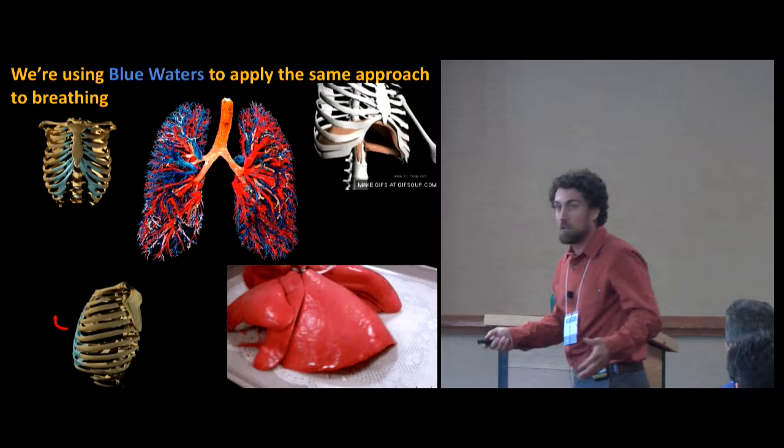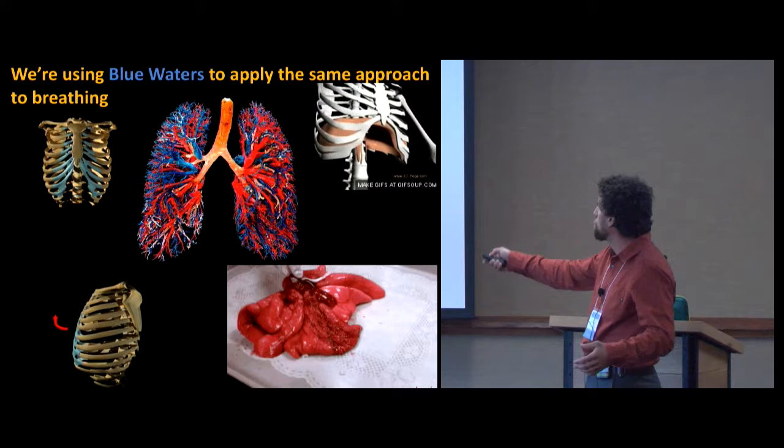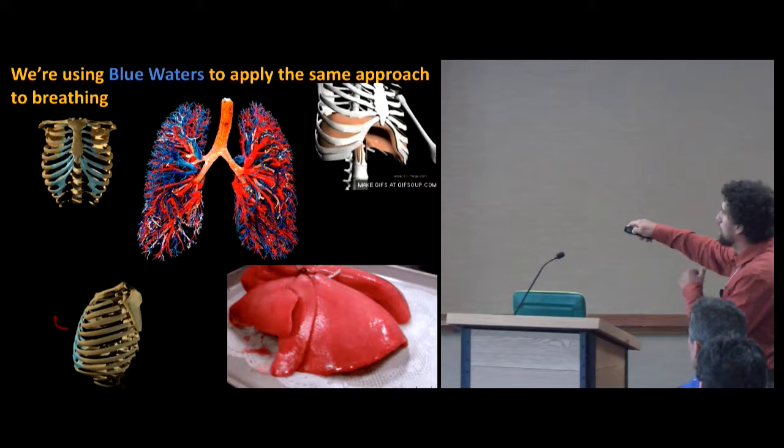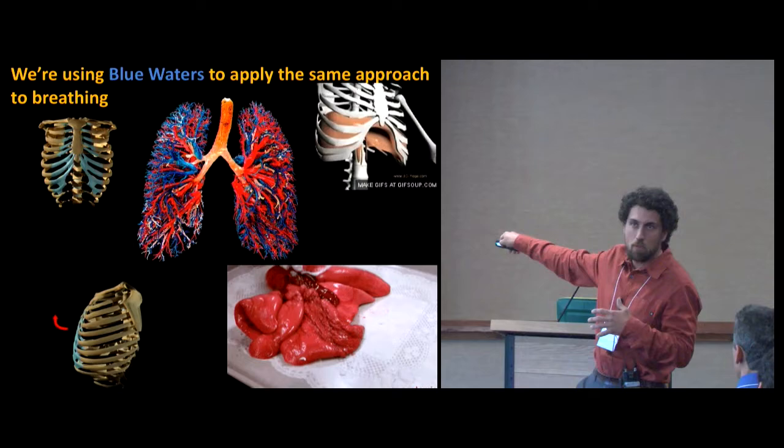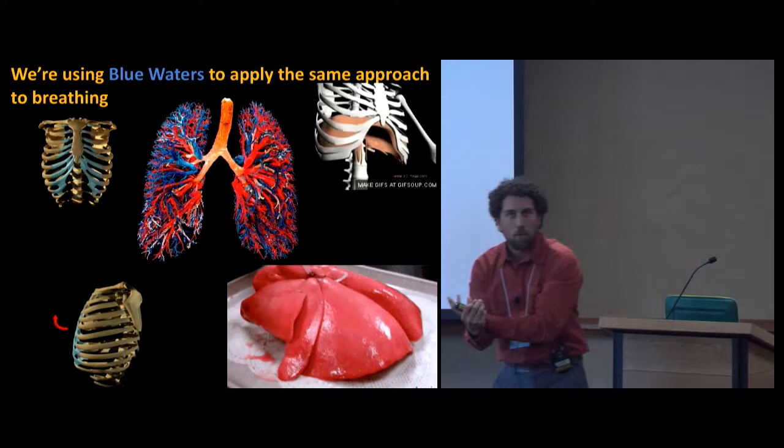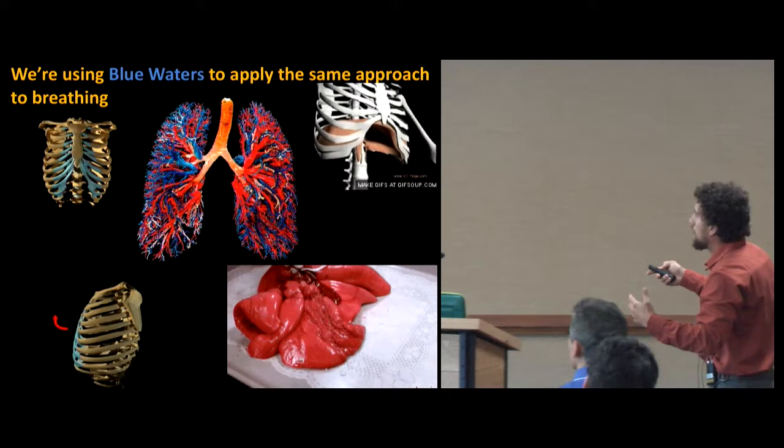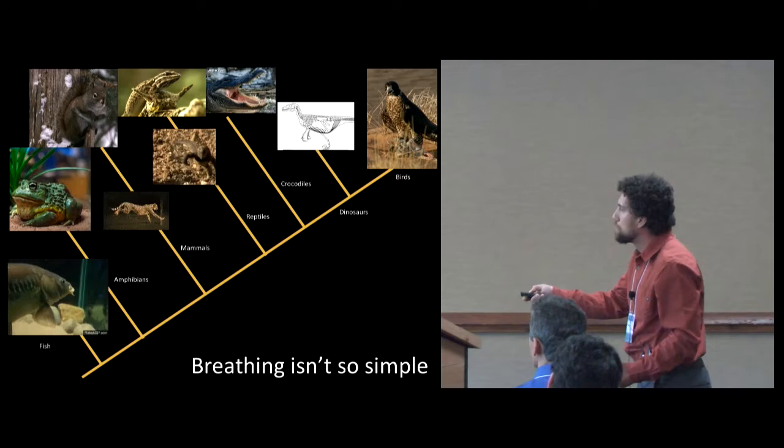You could look at the reconstruction of the evolution from a fin to a limb, going from fishes to land animals. That common design has led to a short, powerful limb in a bear and a long, gracile but very efficient and quick limb in a deer. So we're using Blue Waters to apply the same approach to breathing. And maybe you haven't thought about breathing very much because you just do it all the time and it seems pretty easy.